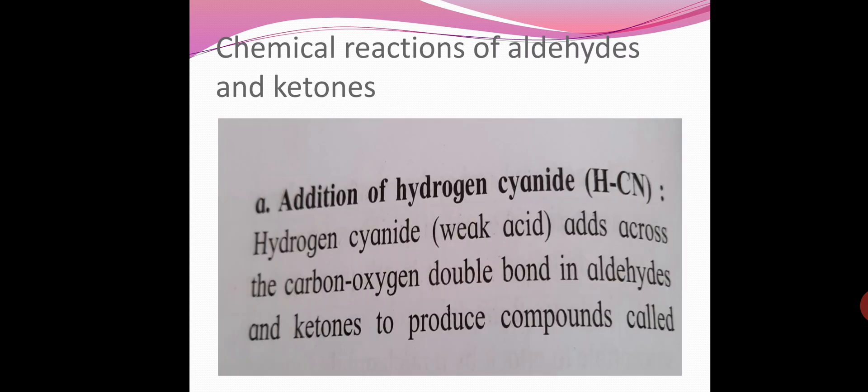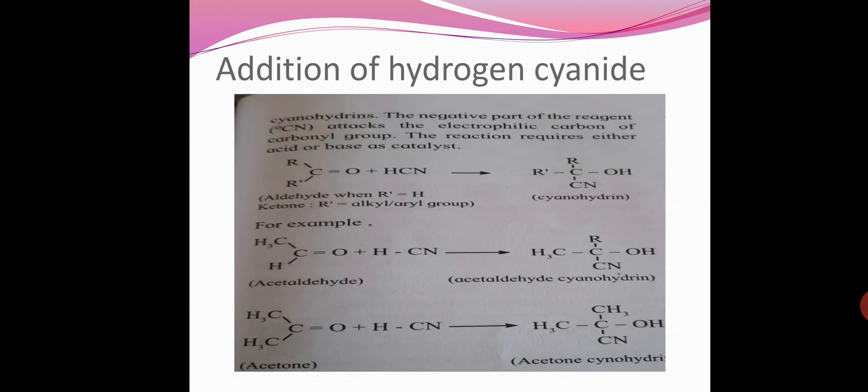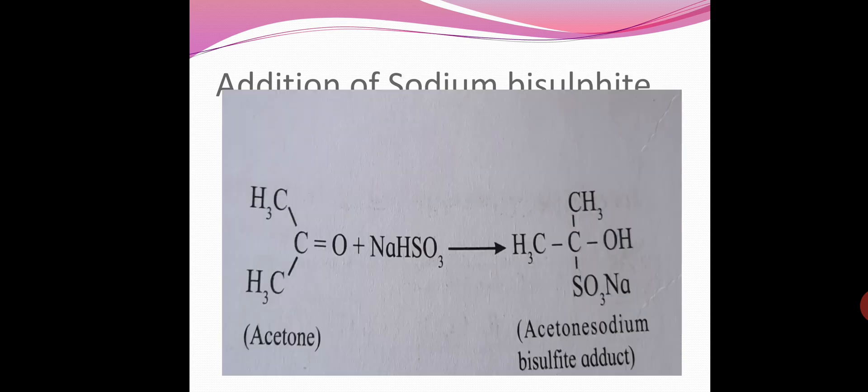Next is addition reactions. First is addition of hydrogen cyanide. Hydrogen cyanide adds across the carbon-oxygen double bond in aldehydes and ketones to produce compounds called cyanohydrins. For example, acetaldehyde with HCN gives acetaldehyde cyanohydrin. Acetone with HCN gives acetone cyanohydrin.